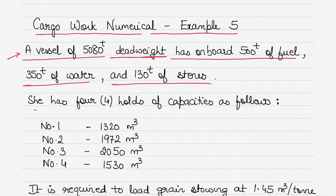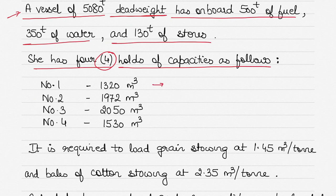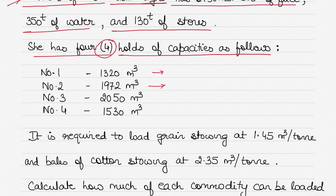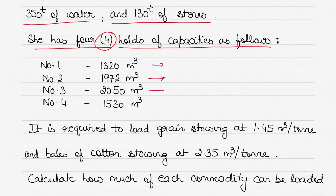She has four holds of capacities as follows: number one hold is 1320 cubic meters, number two hold is 1972 cubic meters, number three hold is 2050 cubic meters, number four hold is 1530 cubic meters.